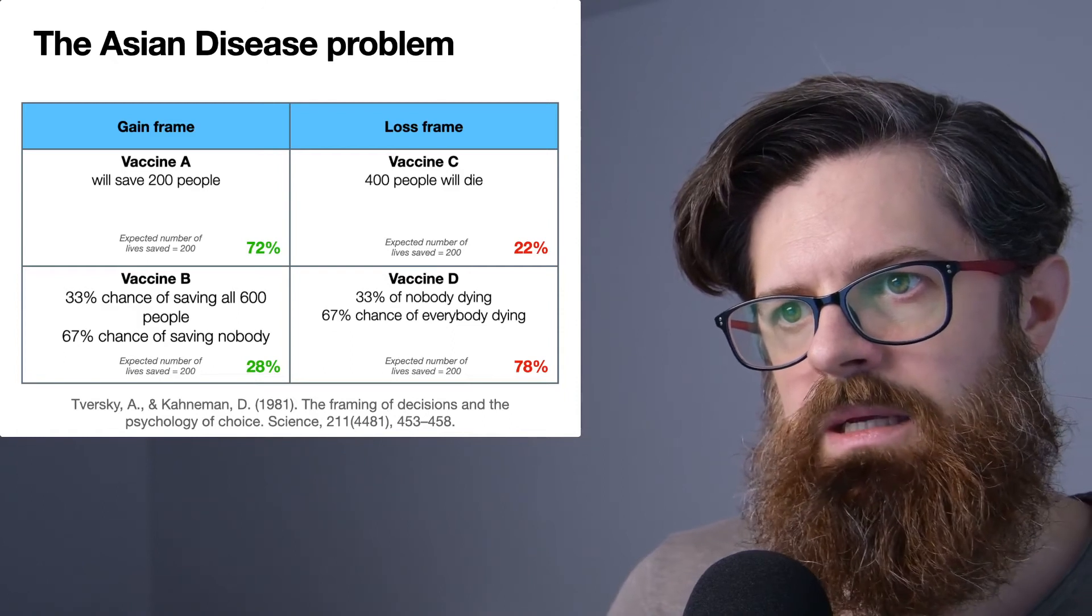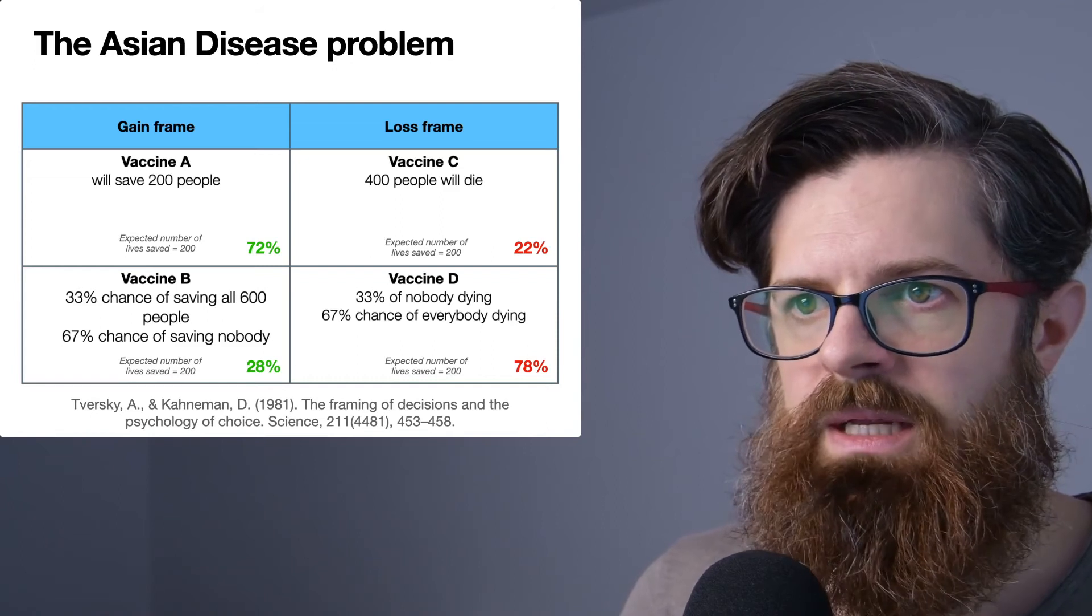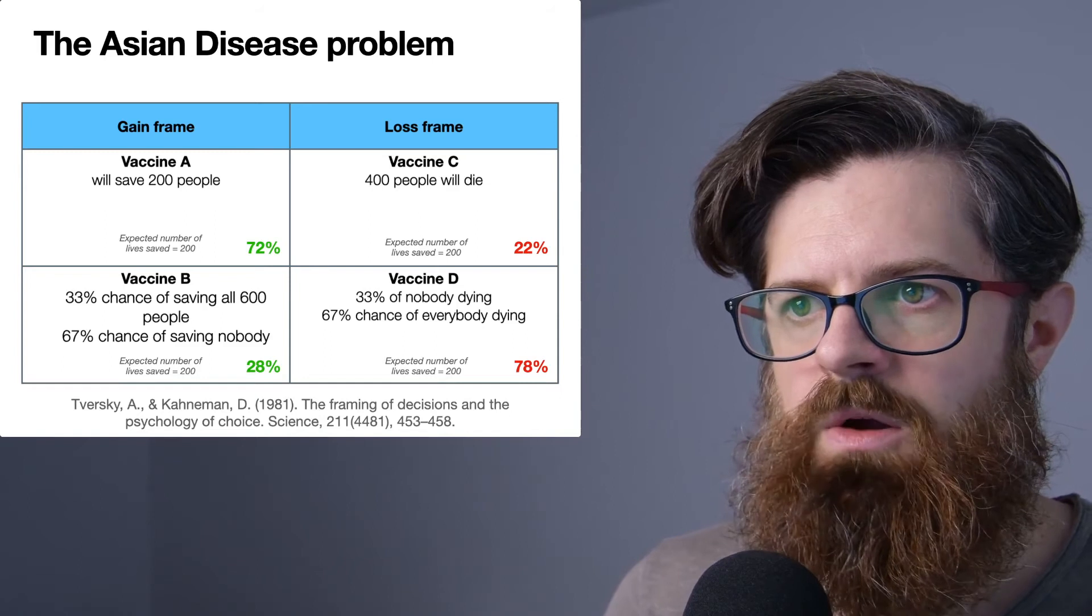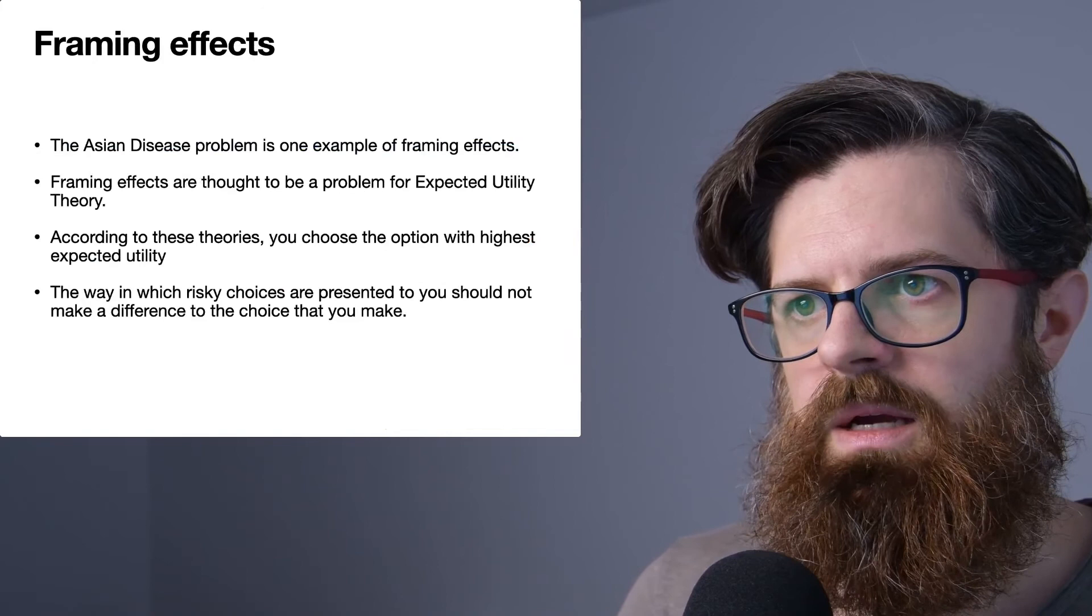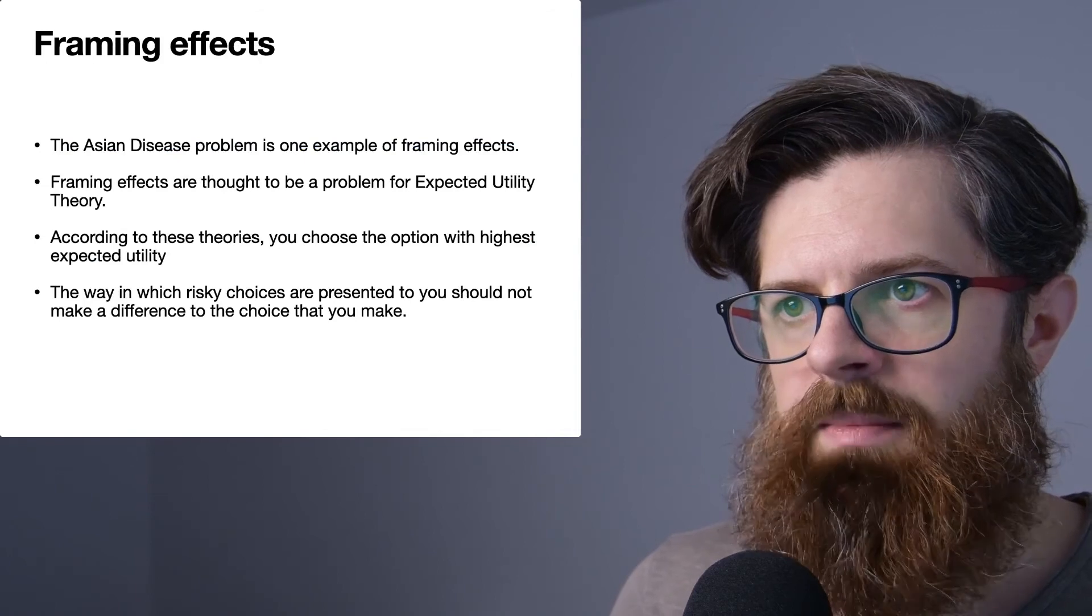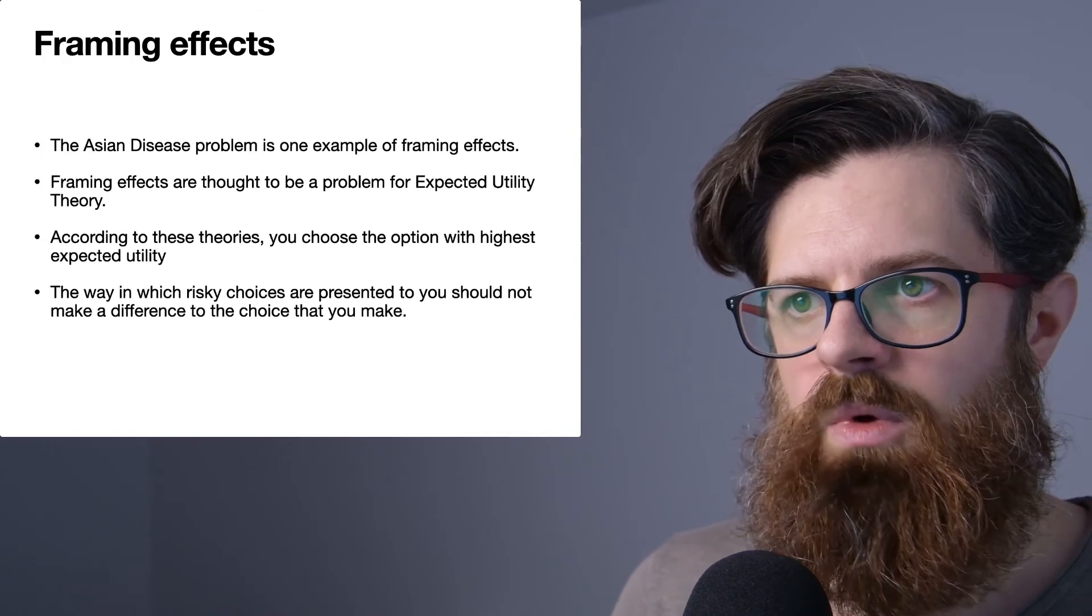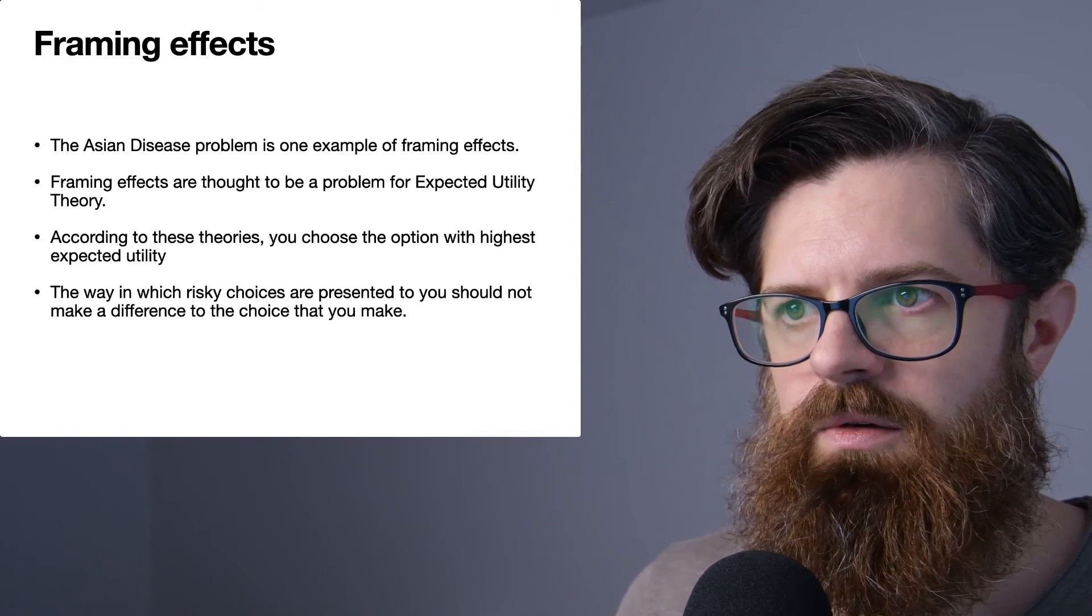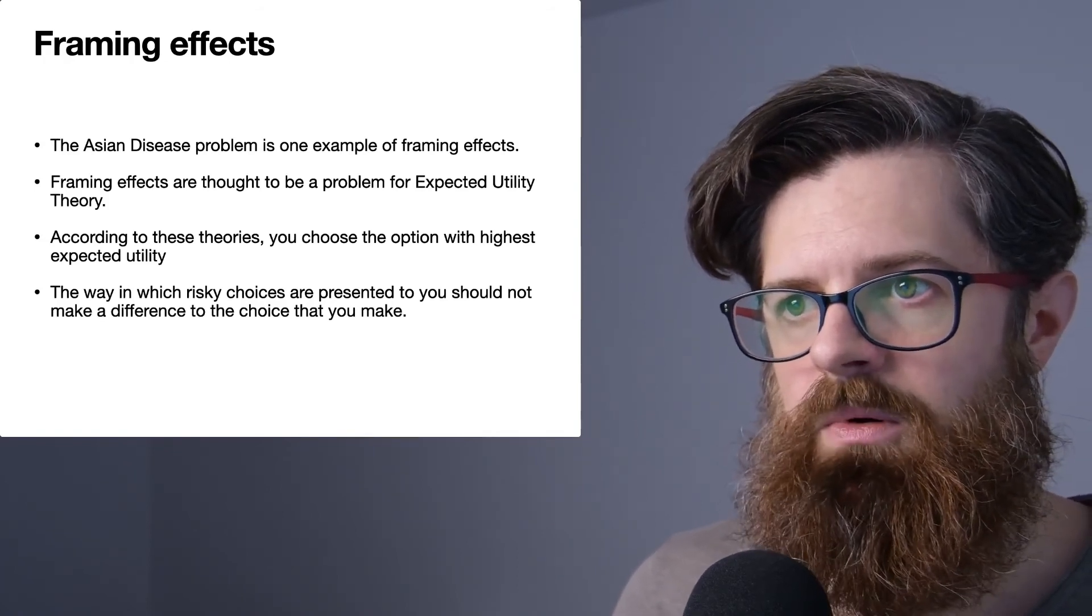This is a kind of change of behavior. It's maybe not quite predicted by expected value theory, and it's also a bit strange in terms of the framing here. This is one example of what you might call a framing effect. We saw that the only difference between the two examples was whether the options were framed in the sense of saving people versus the number of people who would die.